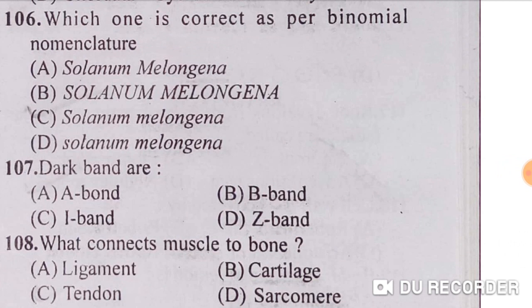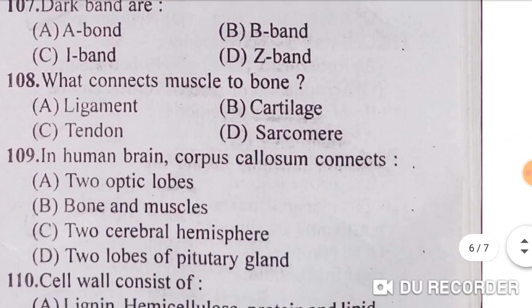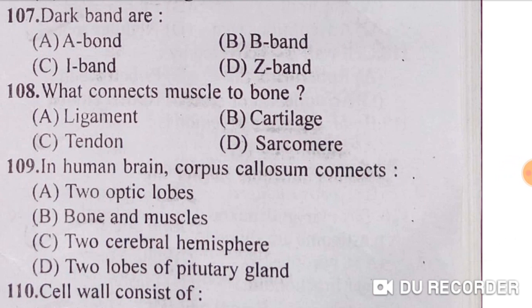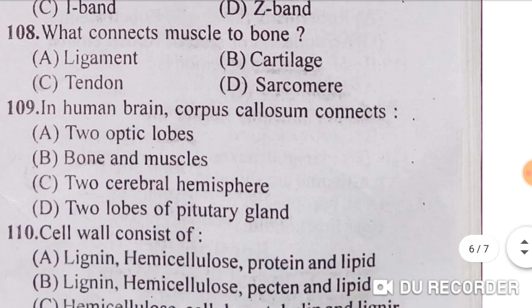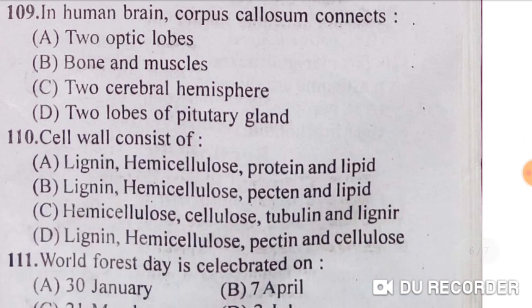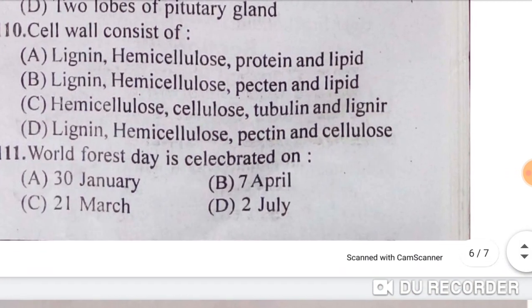The dark band in muscle fibers is the A band — option A is correct. What connects muscle to bone? Tendons connect muscle to bone — option C is correct. In the human brain, corpus callosum connects the two cerebral hemispheres — option C is correct. Cell wall consists of pectin, hemicellulose, and cellulose — option D is correct.